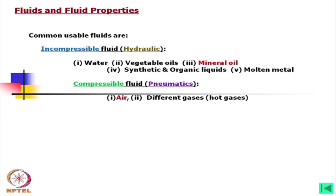Common usable incompressible fluids for hydraulics are: first, water — fluid power started with water but it was found not very suitable. Next, vegetable oils were used at an earlier stage. But at one point it was found that mineral oil, the petroleum-based oil, has very good properties for use in fluid power systems.